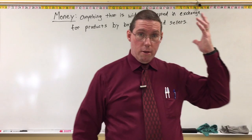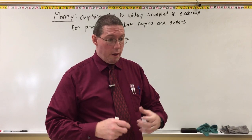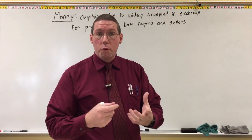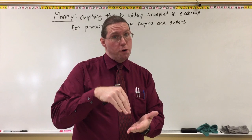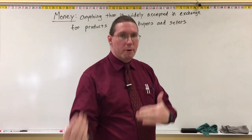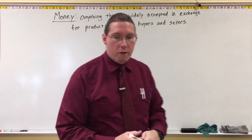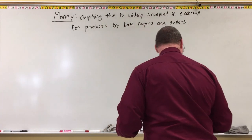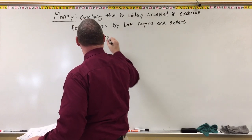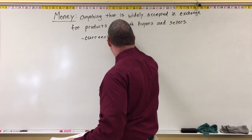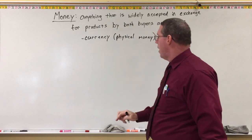Oftentimes in societies throughout history, like the Romans, they would take gold or silver and mint it into a shape with a picture of Caesar on it. That coin was generally accepted by everybody, and therefore those coins were considered money. What we mostly talk about these days is what we refer to as currency. Currency is physical money — the pieces of paper and the coins.